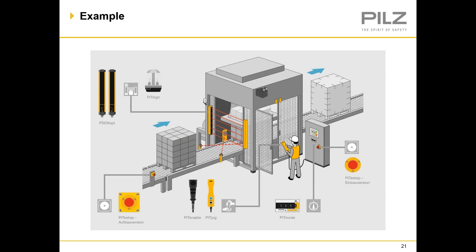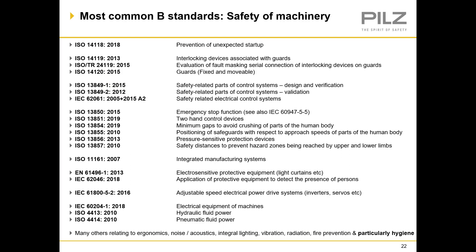The most common Type B standards for packaging machines include: EN 14118 — prevention of unexpected startups; EN 14119 — interlocking devices associated with guards; EN 13849 parts 1 and 2 — safety-related parts of control systems, design, validation and verification; EN 60947-5-1 — control devices; and EN 60204 — electrical equipment of machines.